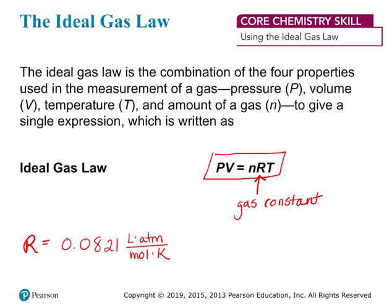We need all of those different units to make sure this equality holds. You could use other units in your gas constant, but that changes the value of R. If you look up the gas constant on Wikipedia, there are many different values listed with different units. For our purposes, we're mostly going to stick to this value of R: 0.0821.